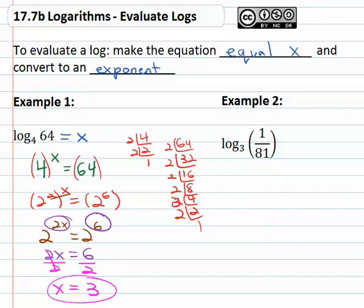Let's try another example. How about log base three of one over eighty one? If we make this equal to x and change it to exponential form, we have a base of three and exponent of x is equal to one over eighty one.